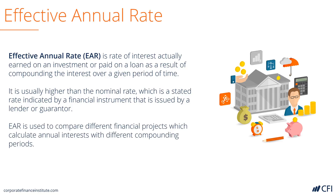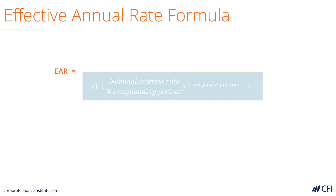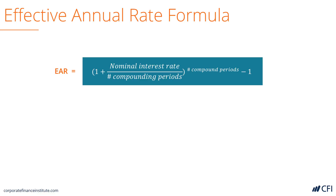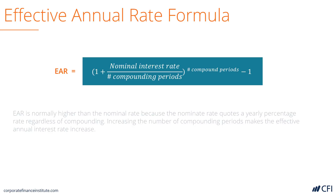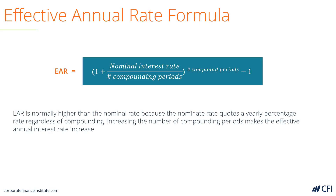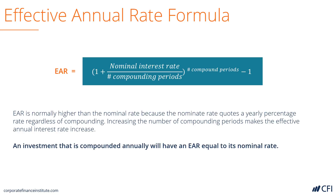It's used to compare different projects, loans, and investments that have different annual interest rates and compounding periods. The formula takes into account the nominal interest rate and the number of compounding periods, and it's higher because of these compounding effects. It's important to note that an investment with annual compounding has an effective annual rate that's equal to the nominal rate.